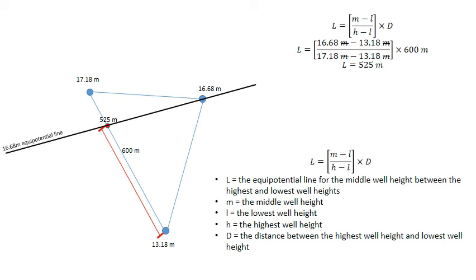Now to find the flow direction from this point, we need to remember that groundwater flow crosses equipotential lines at right angles. We're going to do this from the highest well head — so it needs to be a right angle. There's our right angle there, and it needs to come from that well height. We draw that line in, and that is our flow direction for these three wells.